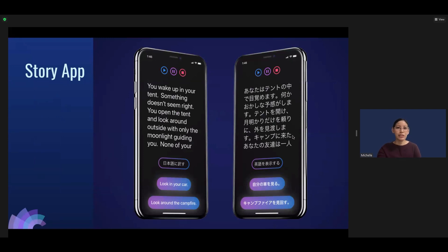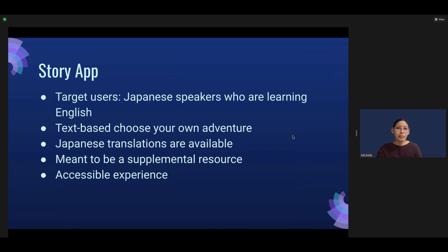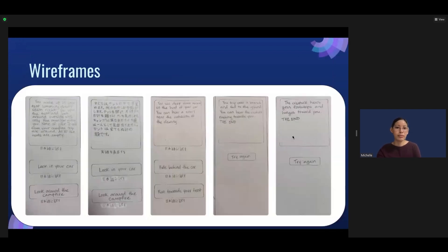I'd like to introduce my personal project and the accessibility concepts I learned. This app is mainly for Japanese speakers who are learning English at an intermediate level. It's a text-based choose-your-own-adventure game, with Japanese translations available if needed. It's meant to be a supplemental resource, not a replacement for textbooks, and I've been building it to ensure it's as accessible as possible. Here are some wireframes I started out with, just drawing it out on paper.